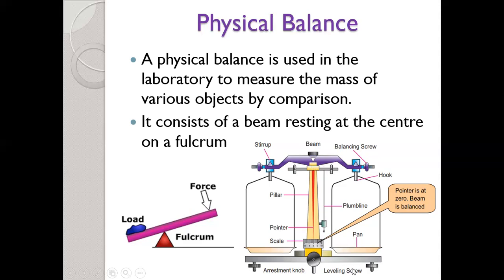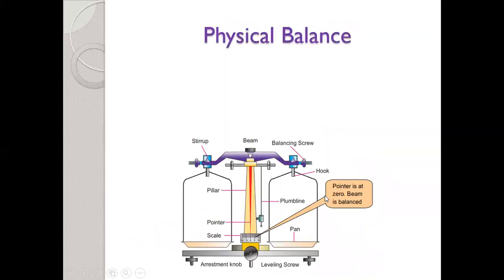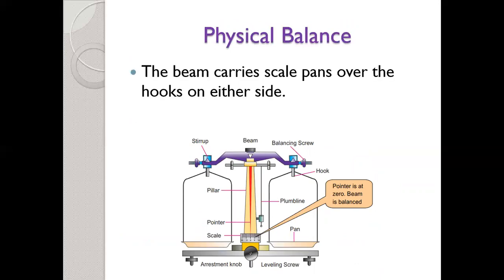Next, we have leveling screws. These are used to level the physical balance on a plane. We can use the plumb line for this purpose. In the measurement, the beam carries scale pans over the hooks on either side. These pans are used in order to measure masses.